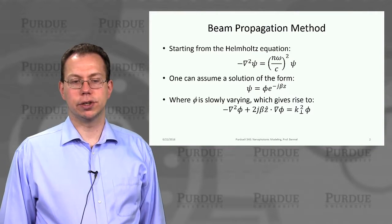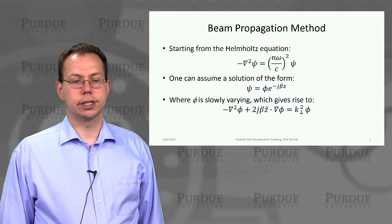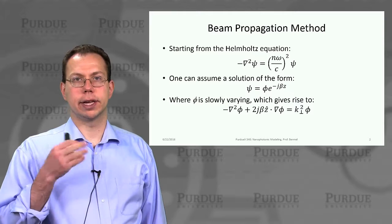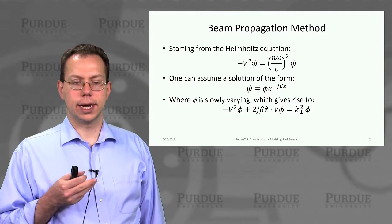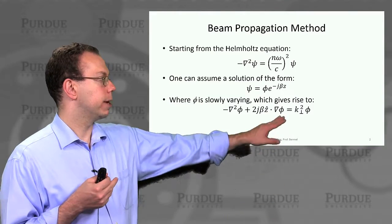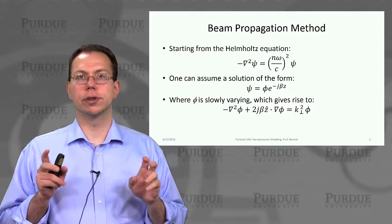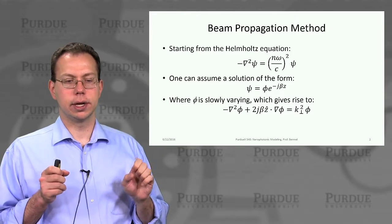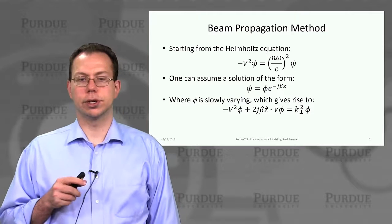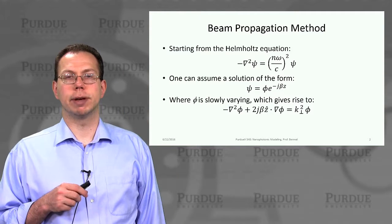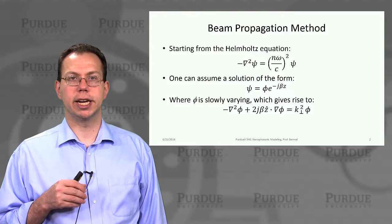You can always assume a solution for this kind of system that has a certain form if you have a fiber-type structure like we talked about in the last lecture. That has this value phi, and we can assume phi is the slowly varying envelope times an exponential in the z direction, which depends on the effective wave vector along z, usually called beta.